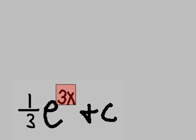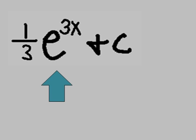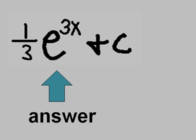So, that becomes now 1 third e to the 3x. Not u, but e to the 3x plus c. The anti-derivative of e to the 3x dx equals 1 third e to the 3x plus c.